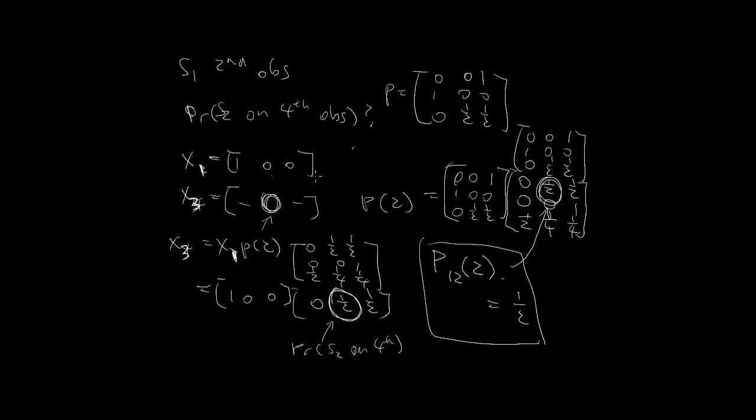So this is one way to look at it. You can use state vectors and then transition to state vectors. Or you can simply here look at the fact that there are two transitions. So you're looking at p1 2 squared, and your answer is 1 half.